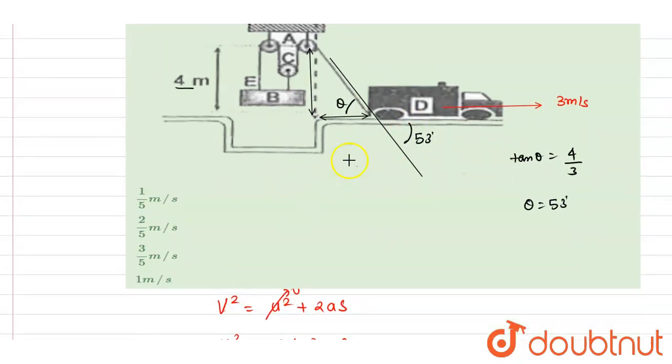So if you see here, if you write down the velocity along the string, it is 3 cos 53°. So if you see cos 53°, it is 3/5, so it will be 9/5.